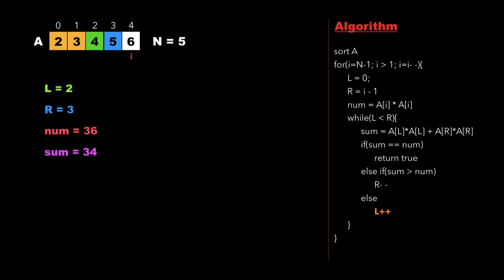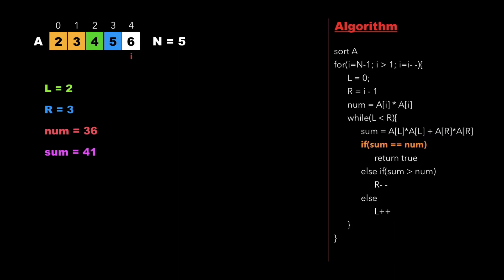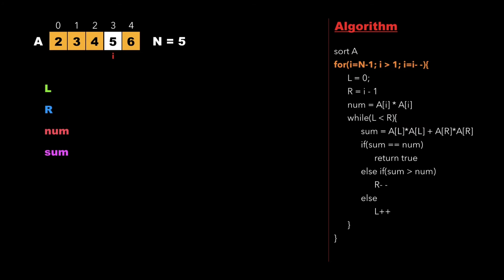Now l points to 4, and we check whether 2 is less than 3. We calculate the new value of sum as 41. We check whether sum equals num. Since 41 is greater than 36, we decrement the value of r. We check again whether l is less than r. Since 2 is not less than 2, we end the while loop and decrement the value of i.